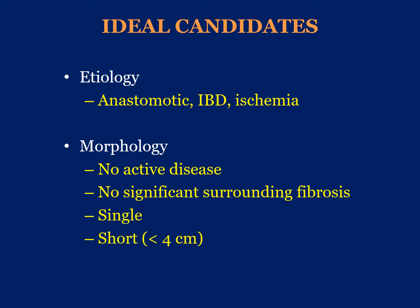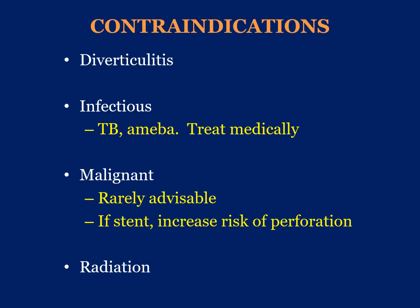The main determinant for candidacy is the morphology of the stricture. Ideally, select patients with no active disease, no significant surrounding fibrosis. The best stricture is a single stricture shorter than four centimeters. Contraindications include diverticulitis, where there is often a long segment of diseased bowel requiring resection. Infectious-related strictures are best treated medically. In the setting of malignancy with stent placement, balloon dilatation is inadvisable due to increased risk of perforation. Radiation-induced strictures are also poor candidates due to significant fibrosis and scarring that does not respond to balloon dilatation.